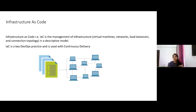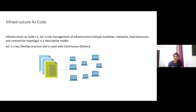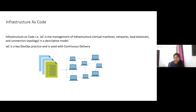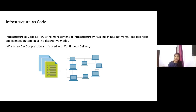This enables us to solve the problem of environment drift in the release pipeline. For example, if you have to deploy 200 virtual machines, you don't want the overhead of logging into the portal and creating them one by one. Infrastructure as code gives you the flexibility to use a common template to deploy all of them.